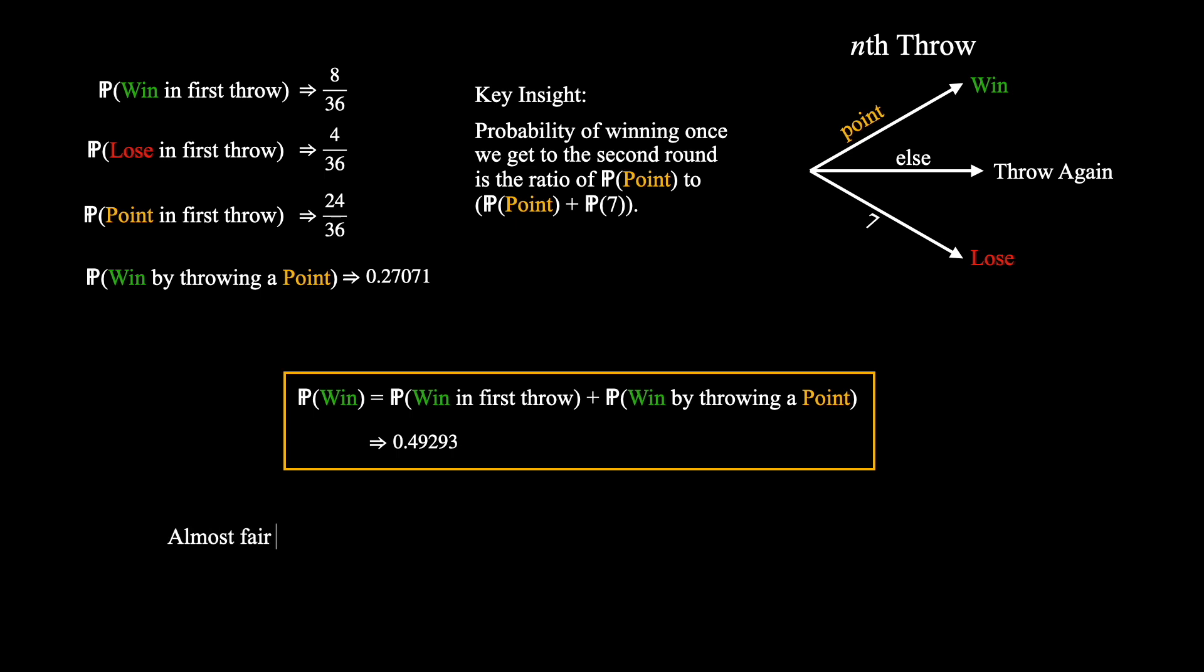We notice that this probability is almost at 50%. This makes craps possibly one of the best games to play at a casino. However, it still does have a small negative expected value on any given play since this probability is still less than half and so I still wouldn't recommend actually playing this.